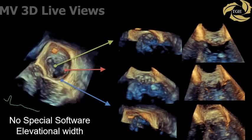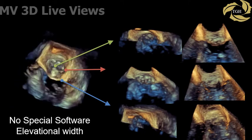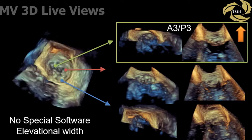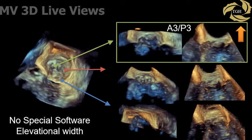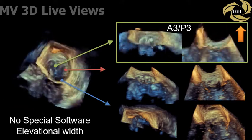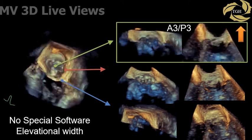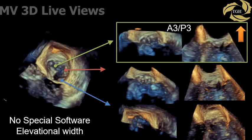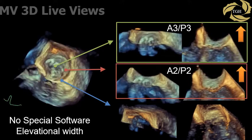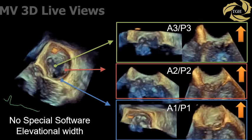Another technique is the live mode, to obtain a 3D dataset of the mitral valve at 0 degrees in a four-chamber view. The elevational size is adjusted to show the entire valve or more or less of the mitral valve. Rotating the image slightly upwards cuts through the mitral valve in a sagittal plane to determine leaflet motion in relation to the mitral annulus. Shown here are cuts through A3-P3, A2-P2, and A1-P1.